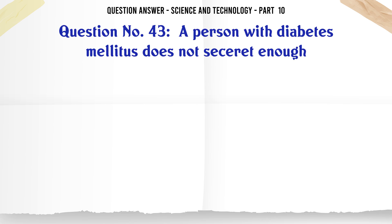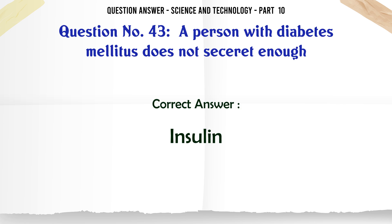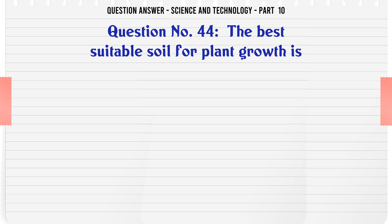A person with diabetes mellitus does not secrete enough. A. Sugar. B. Insulin. C. Glucagon. D. Epinephrine. The correct answer is Insulin.